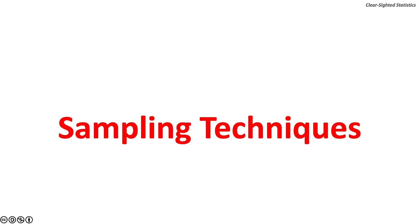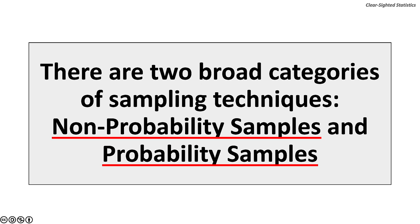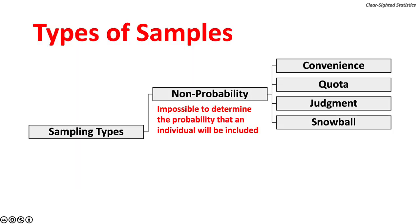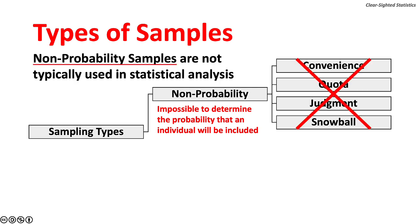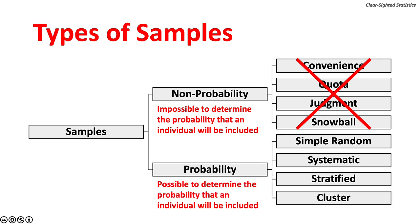We will now turn to sampling techniques. There are two broad categories: non-probability samples and probability samples. With non-probability samples, it is impossible to determine the probability that an individual member of the population will be included in the sample. There are four basic kinds: convenience, quota, judgment, and snowball. With statistical research, we typically use probability samples. There are four basic types: simple random samples, systematic samples, stratified samples, and cluster samples.